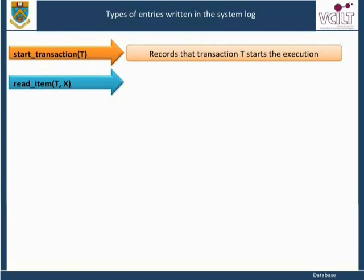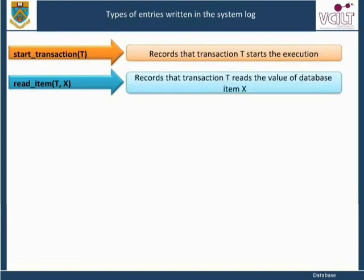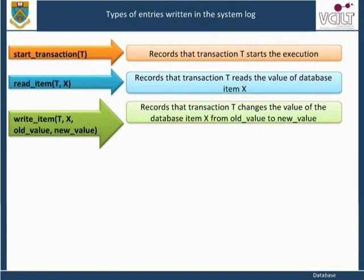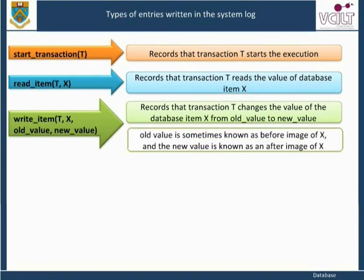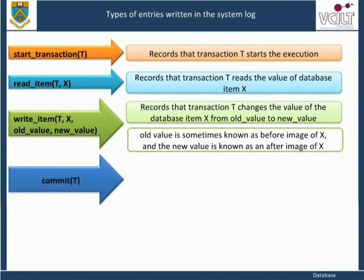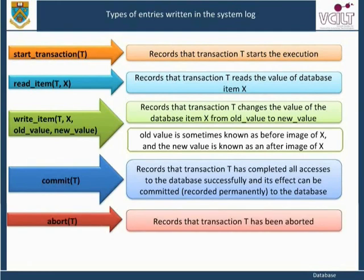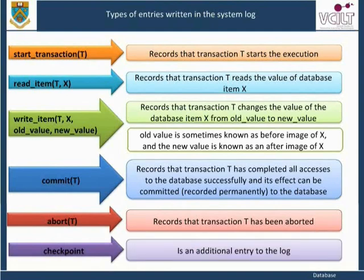The log entry 'read item T, X' records that transaction T reads the value of database item X. The log entry 'write item T, X, old value, new value' records that transaction T changes the value of database item X from old value to new value. The old value is sometimes known as the before image of X, and the new value is known as the after image of X. The log entry 'commit T' records that transaction T has completed all accesses to the database successfully and its effects can be committed, recorded permanently to the database. The log entry 'abort T' records that transaction T has been aborted. A checkpoint entry is an additional entry to the log; its purpose will be described in a later section.